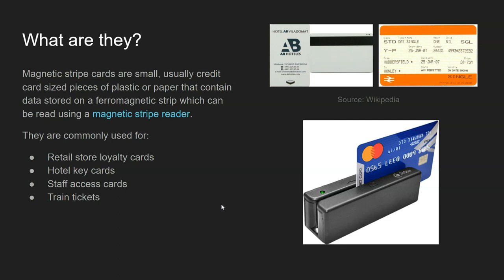So first of all, what are they? They're small, usually credit card-sized pieces of plastic or paper that contain data stored on a ferromagnetic strip — the black strip here. Usually it's black or grey. That data stored on there can be read really quickly using a magnetic stripe reader, which you see here.